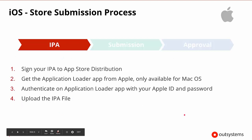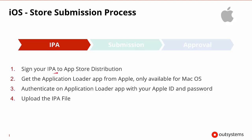What is the iOS store submission process? If we look at signing your IPA to the app store distribution, first we sign the package, which is the IPA, and then we get the Application Loader from Apple, which unfortunately is only available for macOS. You then take your Mac, use the Application Loader, authenticate with your Apple ID and password, and then upload the IPA file to the store.